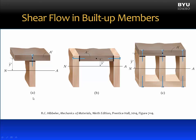Let's consider three different built-up beams. In each of these built-up beams, the shear force is in the vertical direction. For beam A, this section is composed of two members, and we can calculate the shear flow at the joint between these two members, which are held together by fasteners. A-prime is the cross-sectional area of the segment connected to the beam at the juncture where the shear flow is calculated. Y-bar-prime is the distance from the neutral axis to the centroid of A-prime.